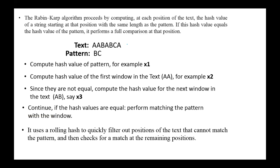For example, given the following text and pattern, we first compute the hash value of the pattern — suppose it is X1. We compute the hash value of the first window, 'AA', and suppose it equals X2. Since they are not equal, we compute the hash value for the next window in the text, 'AB', call it X3, and we continue. If the hash values are equal, we perform a full match of the pattern with the window. Rabin-Karp algorithm uses a rolling hash to quickly filter out positions of the text that cannot match the pattern, and then checks for a match at the remaining positions.